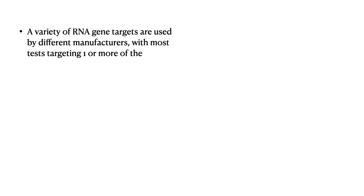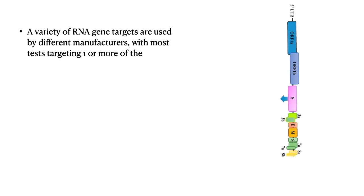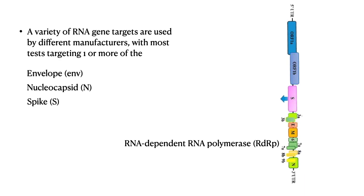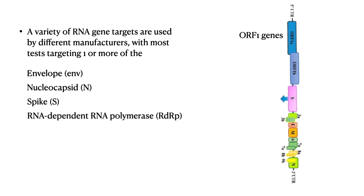A variety of RNA gene targets are used by different manufacturers, with most tests targeting one or more of these genes from the SARS-CoV-2 genome. The most common gene targeted is the envelope, followed by the nucleocapsid, the spike protein, the RNA-dependent RNA polymerase, and lastly the ORF1 gene. Manufacturers target at least one or more of these genes when they make a kit.